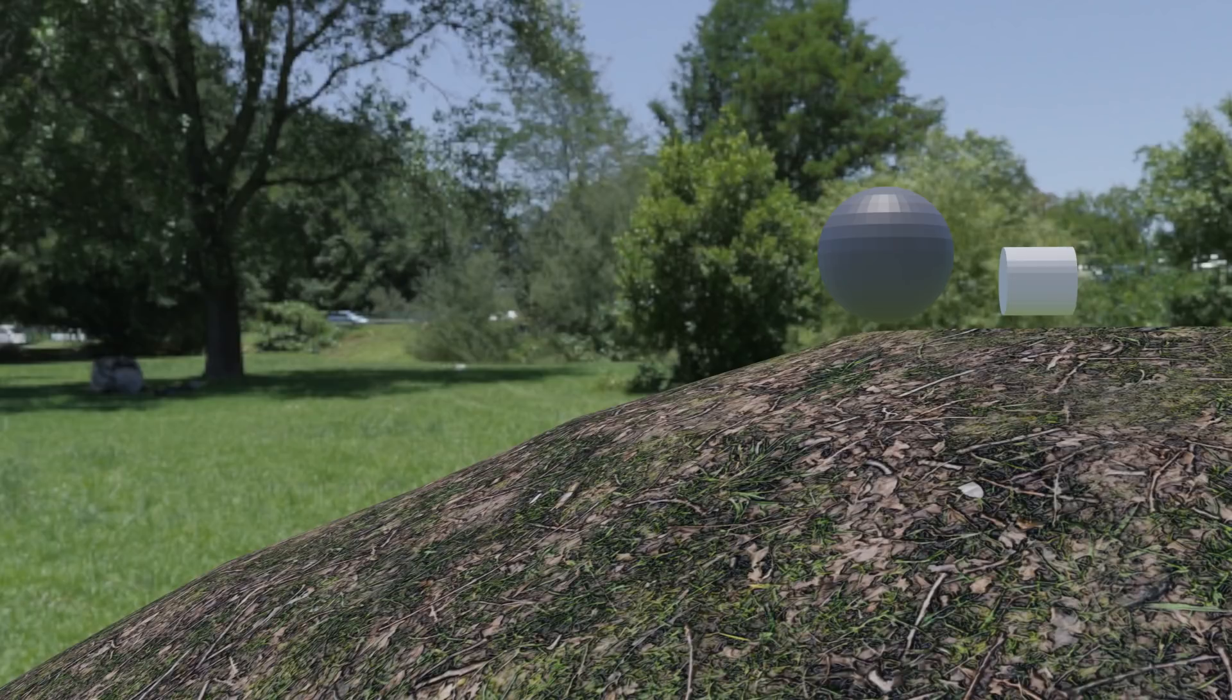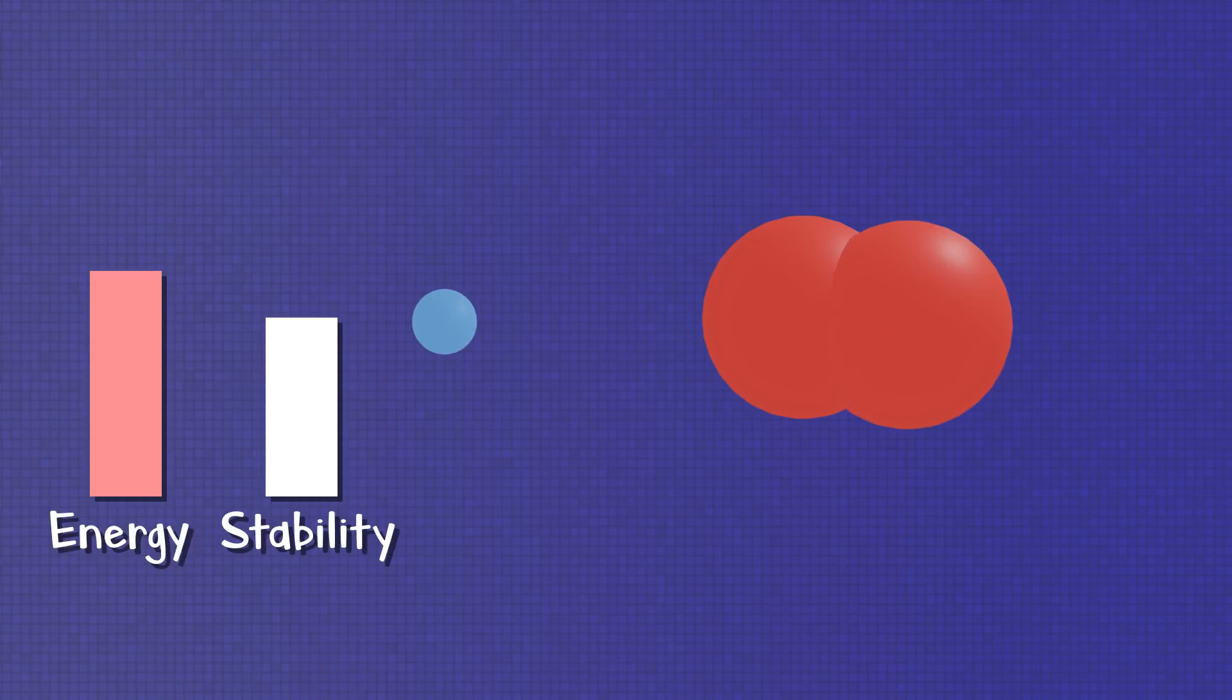A stronger attraction between protons and electrons physically shortens the distance between the two. So like a ball rolling down a hill and being closer to the center of earth's gravity, an electron being brought closer to a proton exhibits the same reduction in energy and increase in stability.